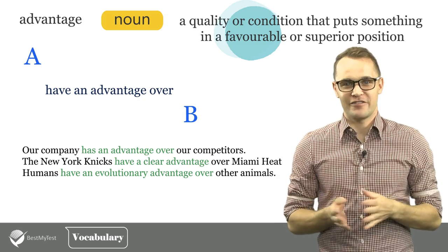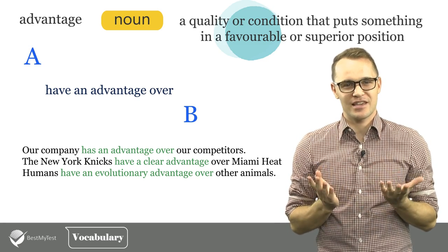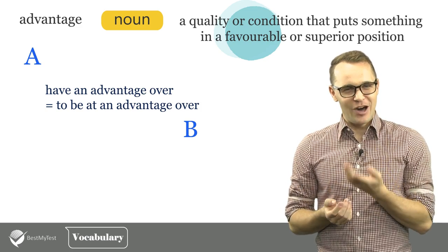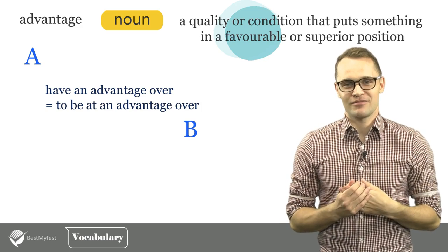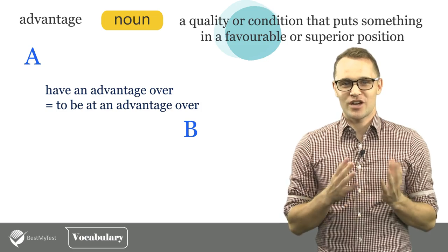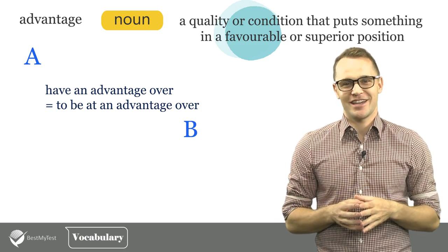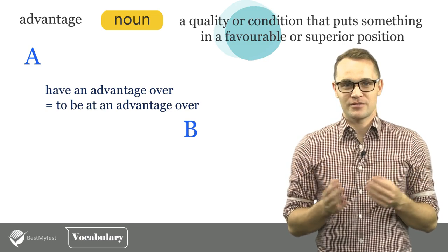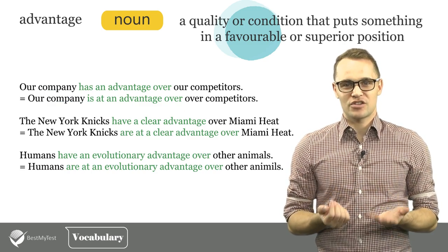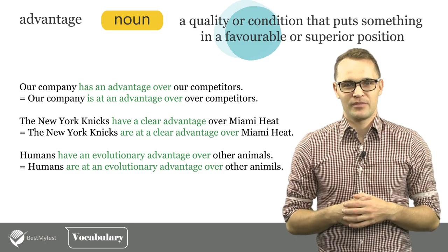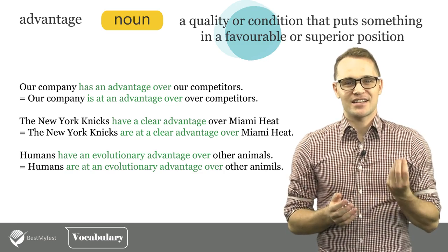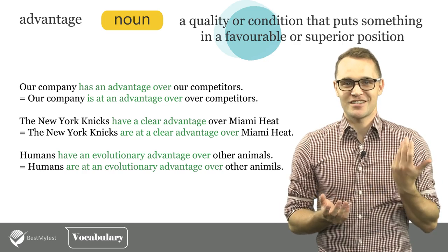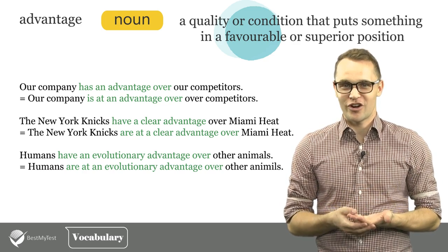Instead of using 'to have an advantage' all the time, you can say 'to be at an advantage' as well. How could you change the three sentences? You can pause this video and try it yourself. We can change the phrasing as follows: Our company is at an advantage over our competitors. The New York Knicks are at a clear advantage over Miami Heat. Or: Humans are at an evolutionary advantage over other animals.